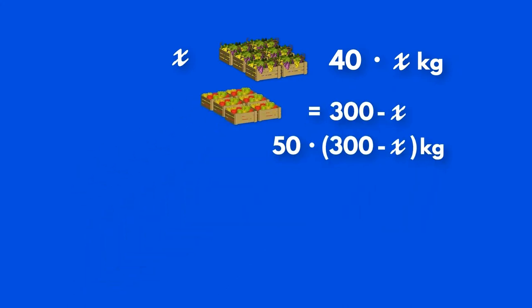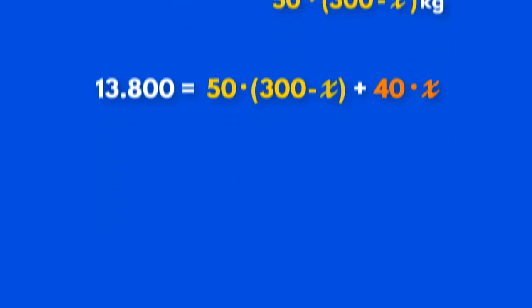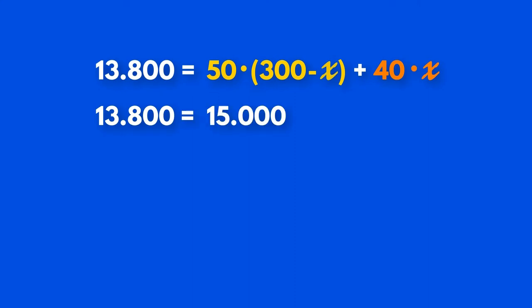The total number of kilograms is 13,800 equals 50 times 300 minus x plus 40 times x. This equation can give us the number of crates of grapes that we need to know. 13,800 equals 15,000 minus 50x plus 40x.